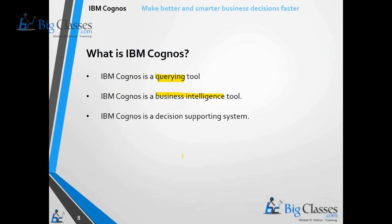These many types of reports are useful for BI. Before taking decisions, managers need to depend on this type of report. Without depending on reports, if they take decisions, they may lose time or money. That is the reason we call the Cognos tool by these different names: querying tool, business intelligence tool, and decision support system.